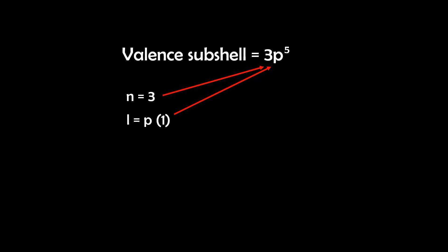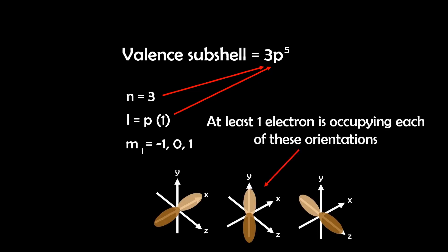The magnetic quantum number, M sub L, can be negative 1, 0, or 1. So this shows that each orientation of the p orbital has at least one electron occupying it.